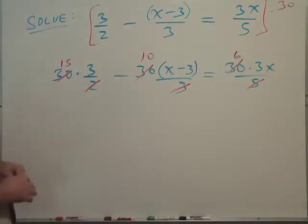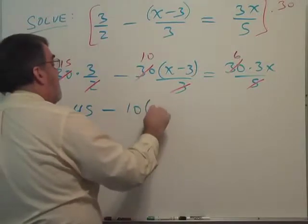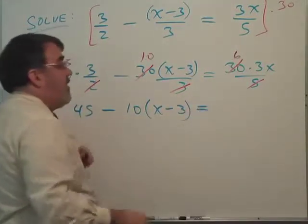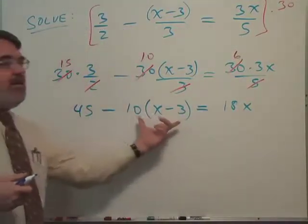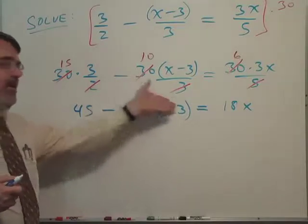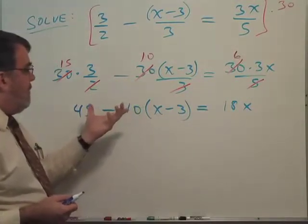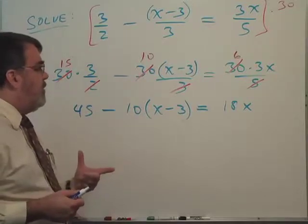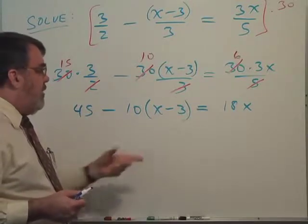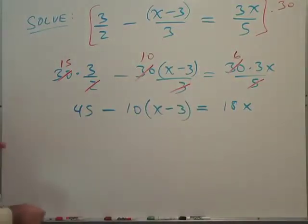This makes it a lot easier to handle. Because now I've got 15 times 3 is 45, minus 10, parentheses, x minus 3, equals 6 times 3x is 18x. I wanted to write this out just to emphasize that we now have to distribute because people tend to skip this step. They'll probably put a minus 3 instead of a plus 30.